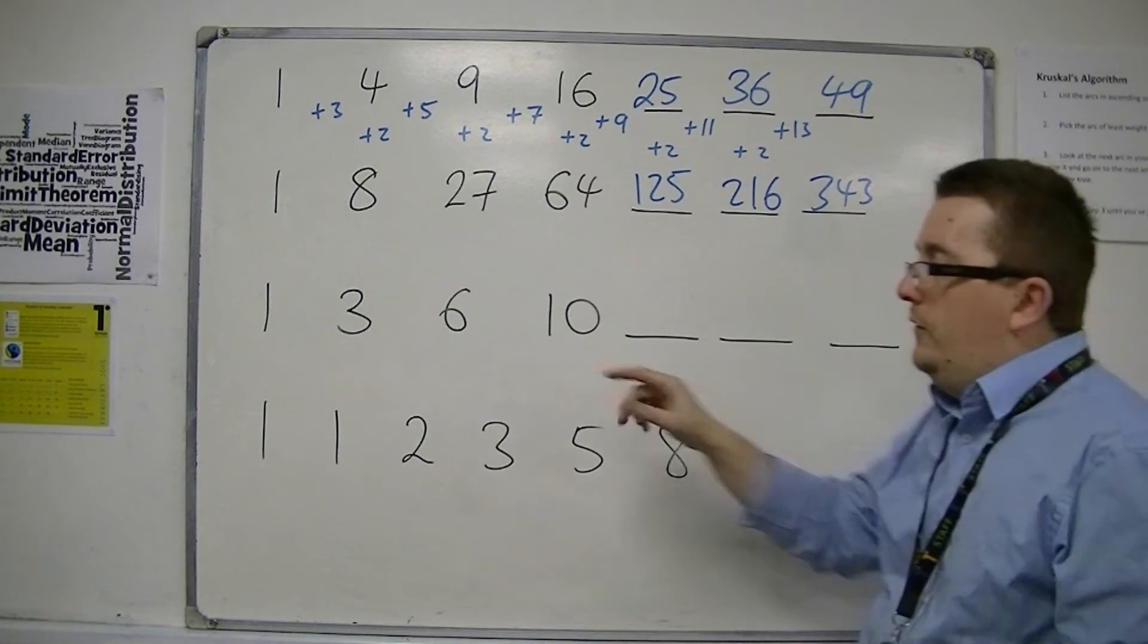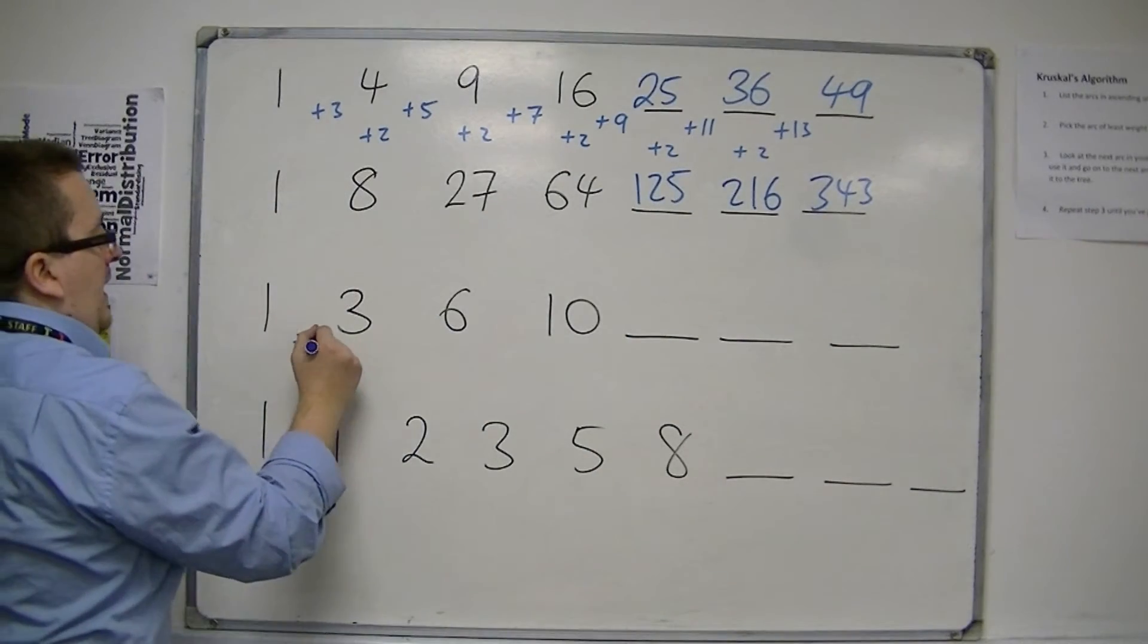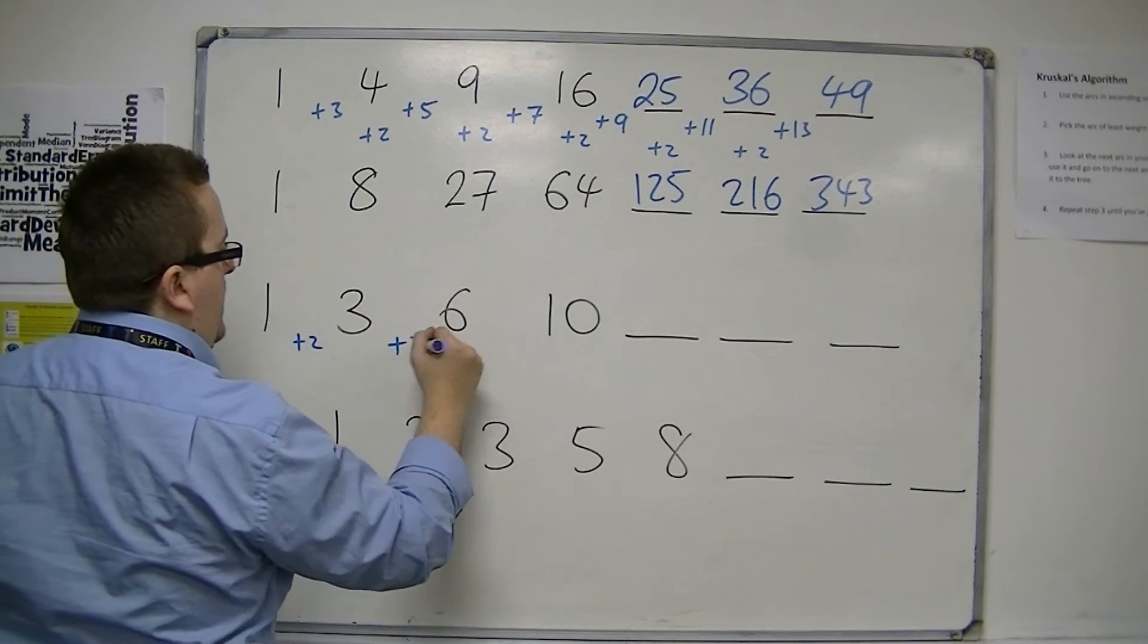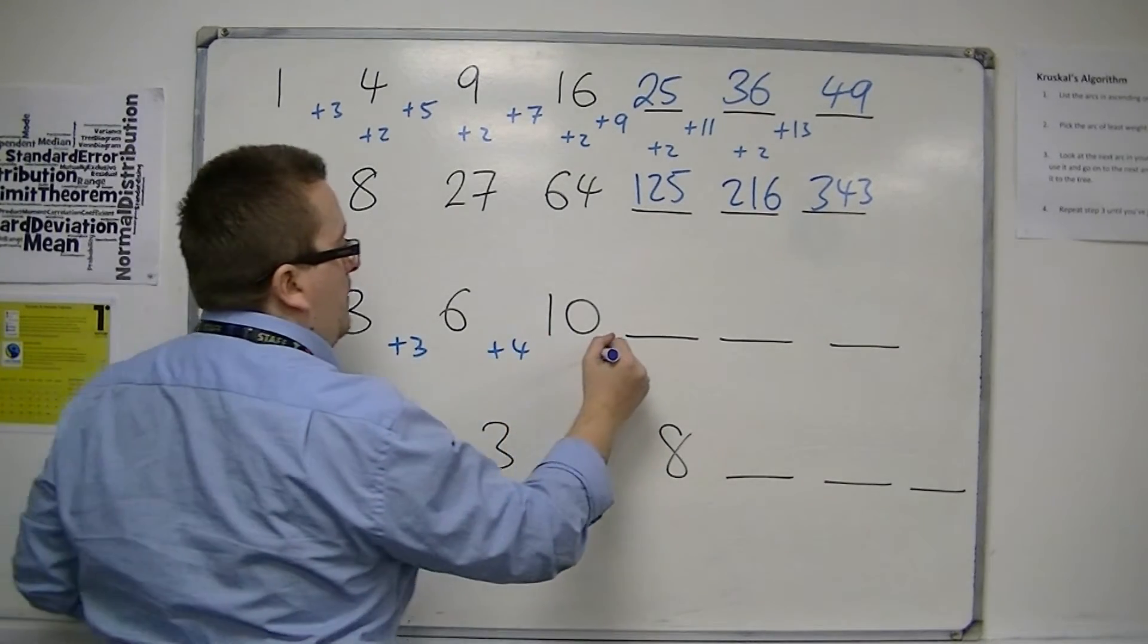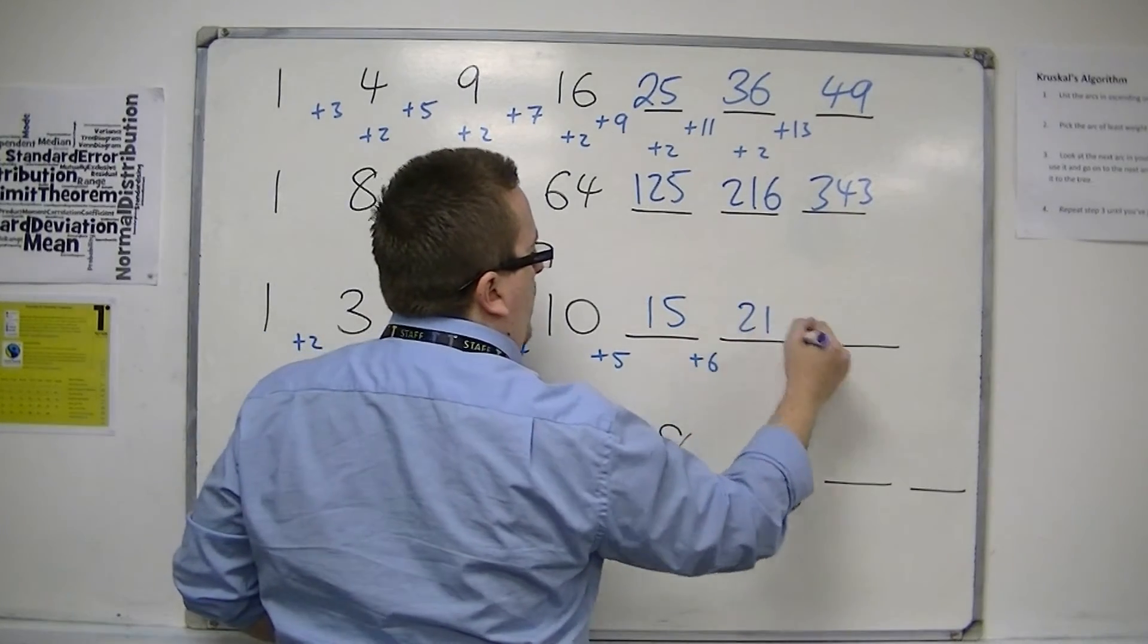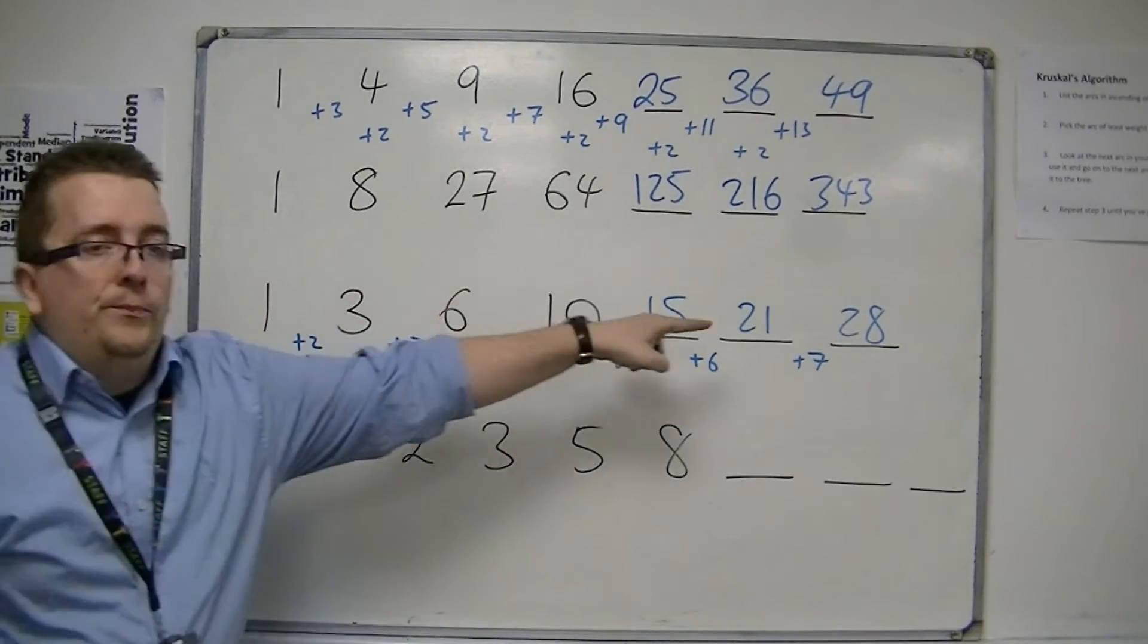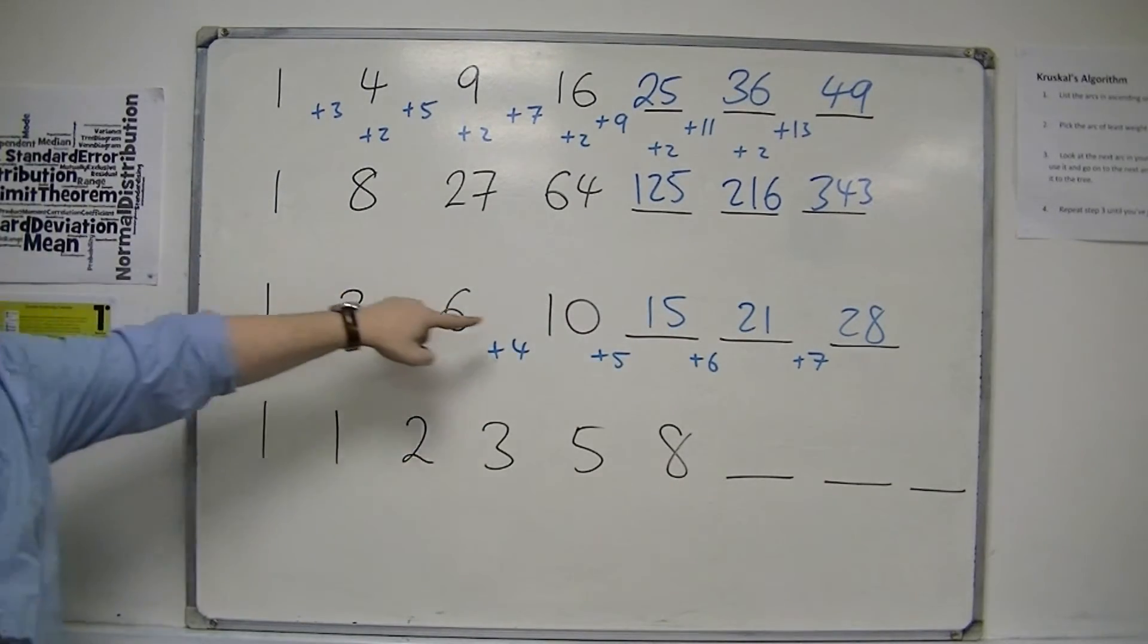Now this third example is a little bit interesting. Adding on 2, adding on 3, adding on 4. So the next one must be adding on 5, so 15. Then adding on 6 is 21. Then adding on 7 is 28. This sequence is known as the triangular numbers.